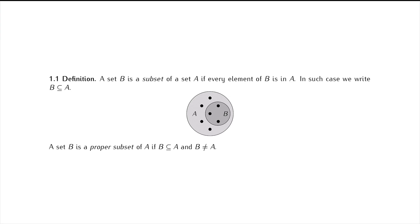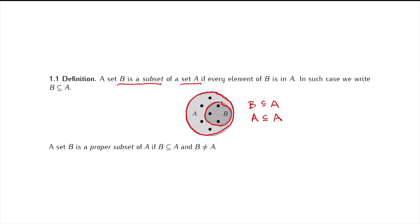In many cases we will be dealing with sets contained in larger sets. Here we have set B, where every element of B is also an element of this larger set A — so B is entirely contained inside A. If every element of a set is an element of some larger set, we say that the smaller set is a subset of the larger set, and we denote that B is a subset of A. A special case: A is always a subset of itself, because every element of A is an element of A.